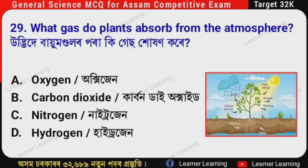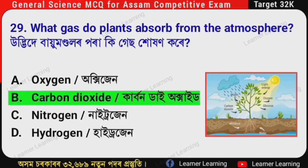Next question: What gas do plants absorb from the atmosphere? (Assamese: Udhvidar bai mandalor pa ra ki gas hokhan kore?) The correct option is Option B — Carbon dioxide. Plants absorb carbon dioxide from the atmosphere.